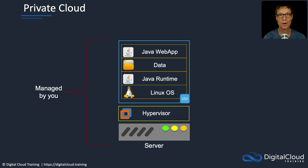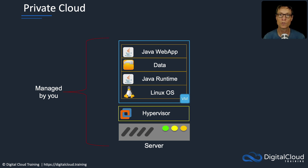Before we get started on those cloud computing service models, I just want to compare it to the private cloud. In the private cloud, in your data center, to run an application you need a server and you'll often have a hypervisor — that layer where virtualization takes place. That means you can run multiple operating systems and multiple servers on one piece of physical hardware. You then have the operating system, application frameworks, data, and the application itself. The key point is that all of this is managed by you — you have to own and manage the entire stack from bottom to top.